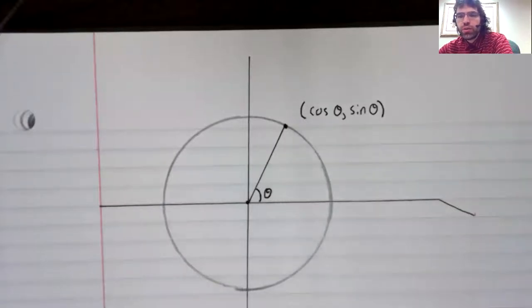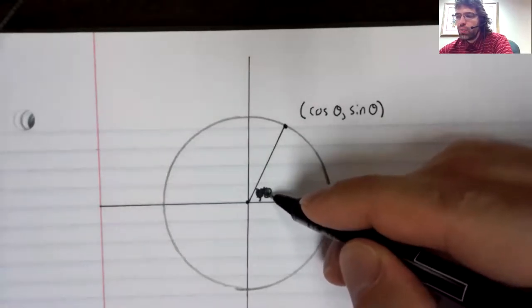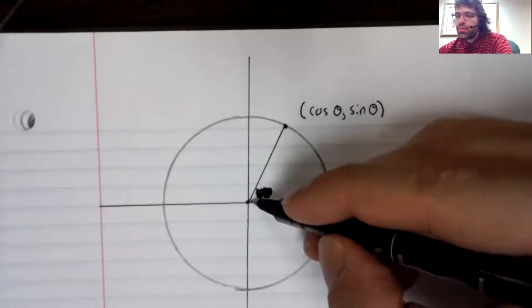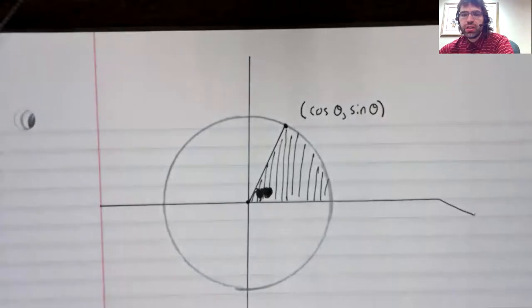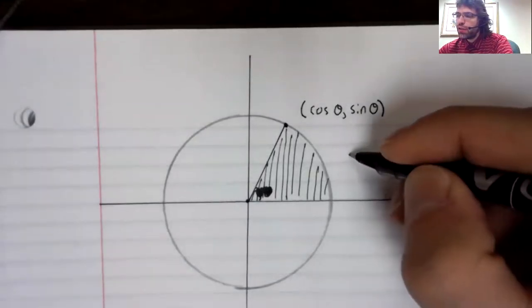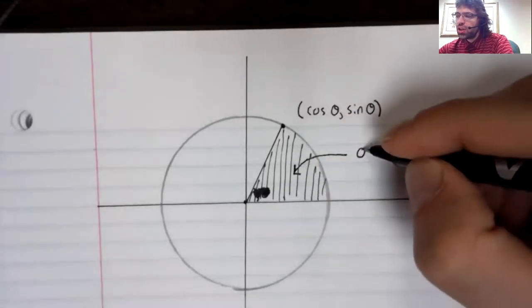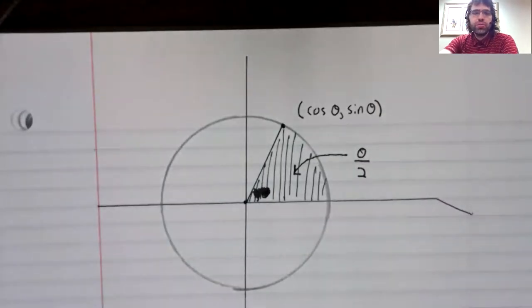Here's another way you could do that. Instead of looking at an angle, you could look at the area of this region. The area of this region is not theta. It's theta divided by two. But that gives you an alternative way of defining the sine and the cosine.